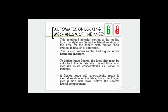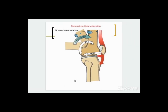This is also known as the locking or screw-home mechanism. To initiate knee flexion, the knee must first be unlocked — the laterally rotated tibia must medially rotate as flexion is initiated. A flexion force will automatically result in medial rotation of the tibia, because the longer medial side will move before the shorter lateral compartment. Quadriceps femoris muscle is responsible for locking of the knee, and studies show the popliteus muscle is responsible for unlocking.